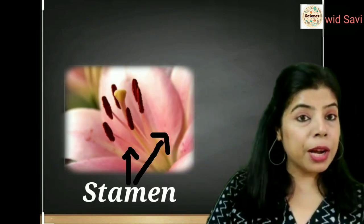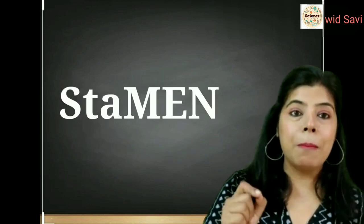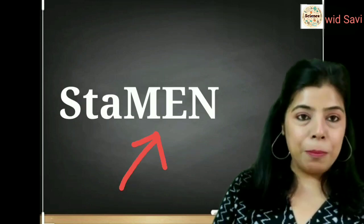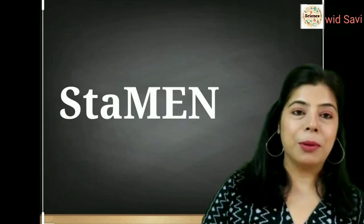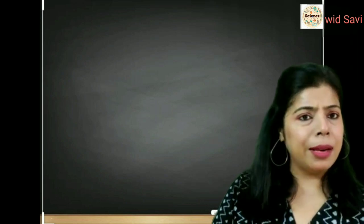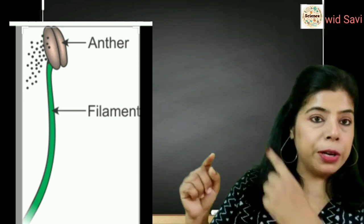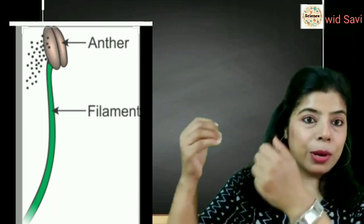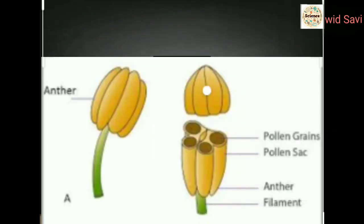Now let's move from the petal to the third whorl — the male reproductive part. The male reproductive part of the flower is called the stamen. Here is a hint to learn it: the word stamen has 'men' in it — S-T-A-Y-M-E-N — so that will always help you remember it is the male reproductive part. The stamen has two structures: it has a bilobed anther at the top — bilobed means two lobes joined together — and there is a filament attached to the anther. The anther contains the pollen sac. The pollen sac has pollen grains inside it, and the pollen grain contains the male cells — the male reproductive cell of the flower is inside the pollen grain.